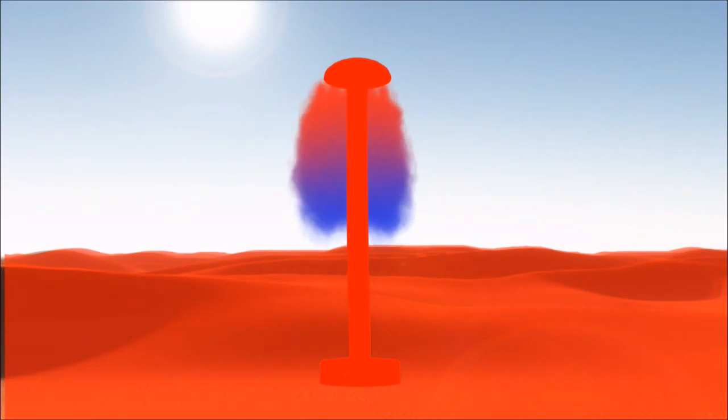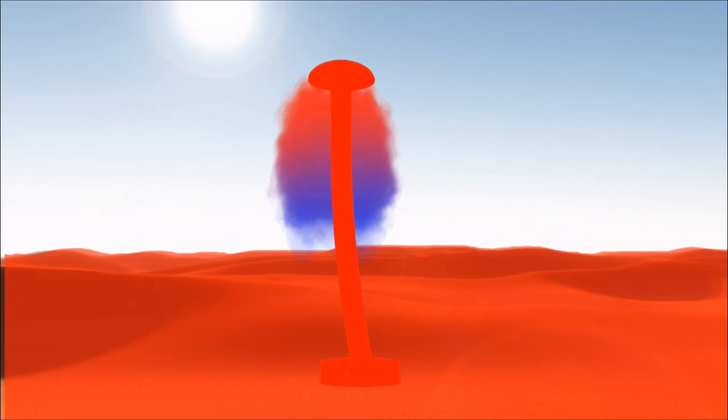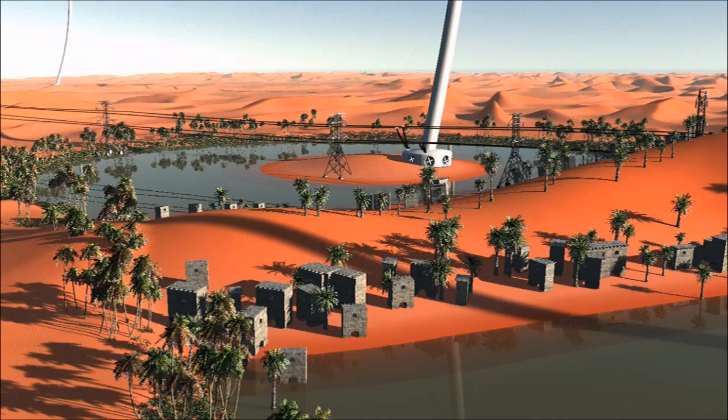The sun heats up our atmosphere unevenly, more at the surface than higher up in the atmosphere. This allows for stable airflow for the system. Now that we understand the principle behind the invention, let us see how we can utilize it.